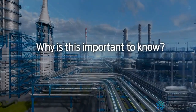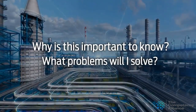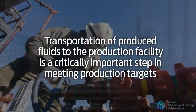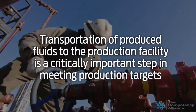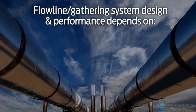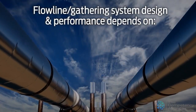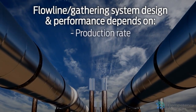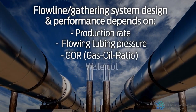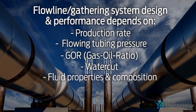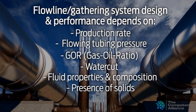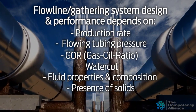Why is this important to know? What problems will I solve? Transportation of produced fluids to the production facility is a critically important step in meeting production targets. Flow line and gathering system design and performance depends on production rate, flowing tubing pressure, GOR (gas oil ratio), water cut, fluid properties and composition, presence of solids such as sand, paraffins, hydrates, scale, and corrosion.